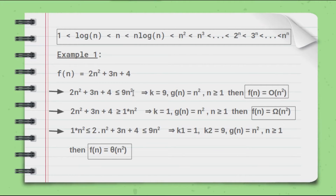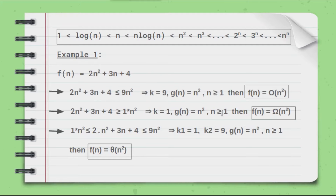If you watched the previous tutorial, you should understand what is going on here. We also have 2n² + 3n + 4 ≥ 1·n², so here we take k = 1 and g(n) = n², for all n ≥ 1. Then f(n) = Omega(n²).